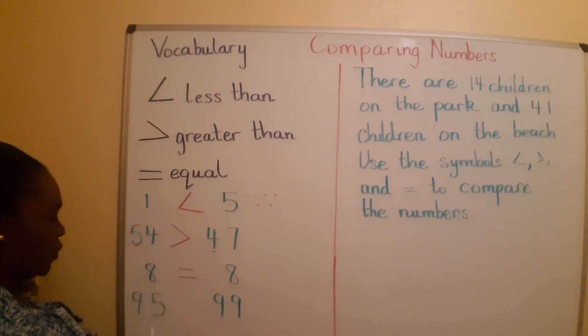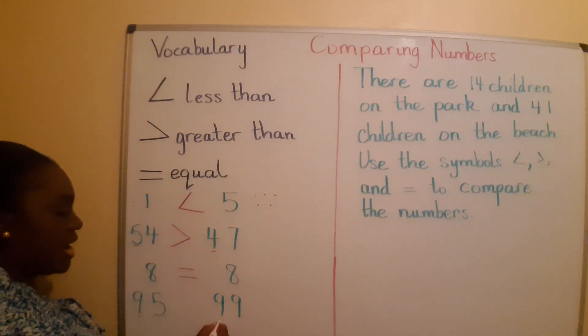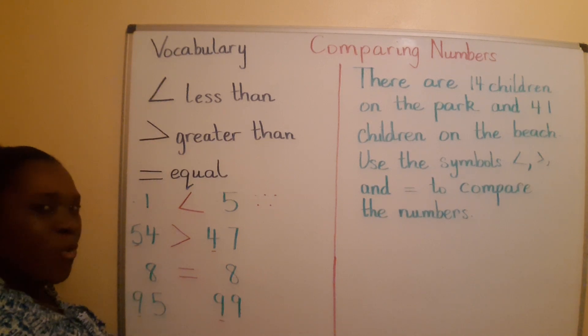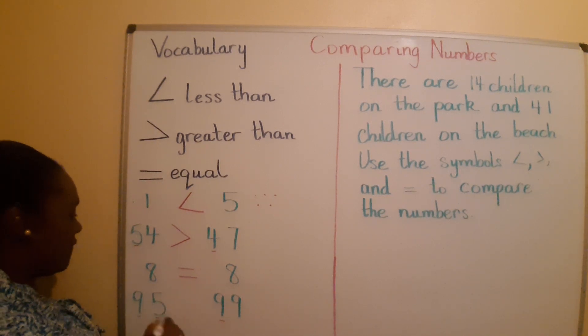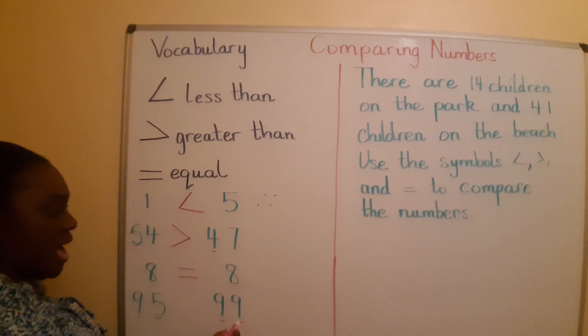Let's move on to 95 and 99. These numbers look similar. There's a 9 in the tens place and a 9 in the tens place. So, let's look at the ones place. Here, we have 5 and then we have 9. We know 9 is greater than 5.